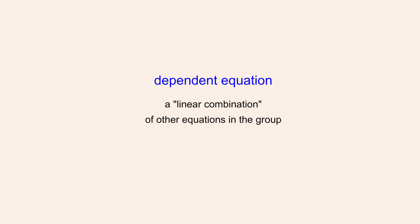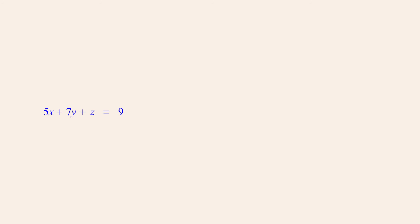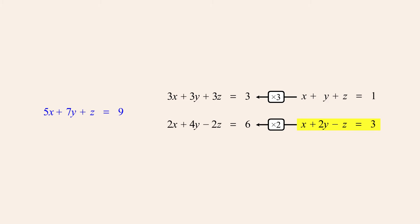So what exactly is a linear combination of equations? A linear combination of equations is produced by first multiplying each equation by a constant and then adding the results. For example, this equation is a linear combination of the two equations on the right, since if we multiply the top equation by three and the bottom equation by two and then add the results, we get the equation on the left. Since this equation was produced by multiplying the other equations by constants and then adding the results, it is a linear combination of those two equations.